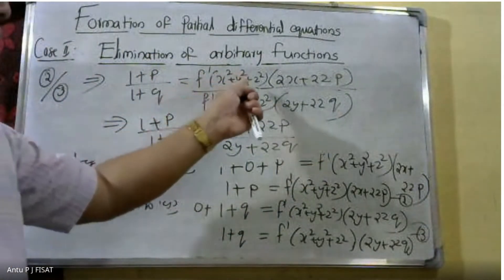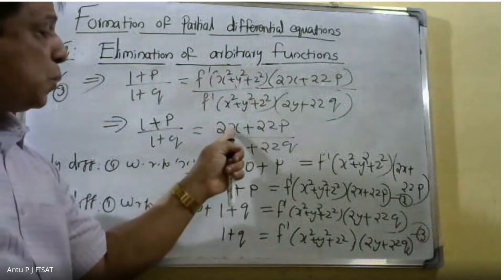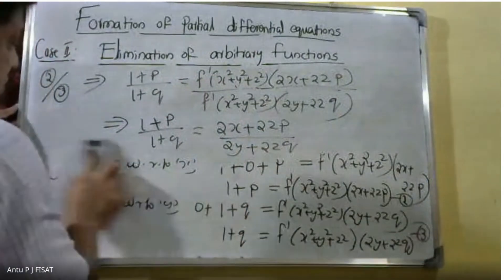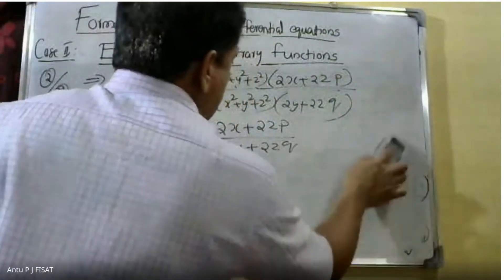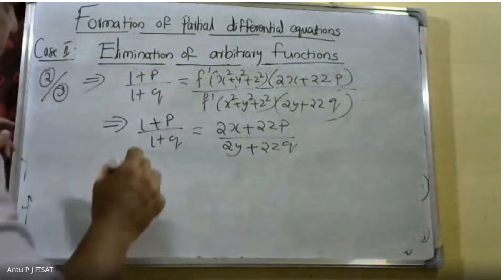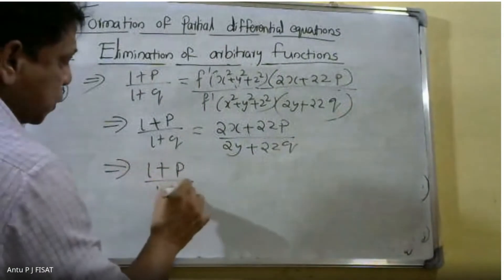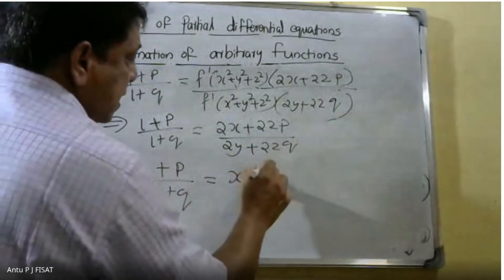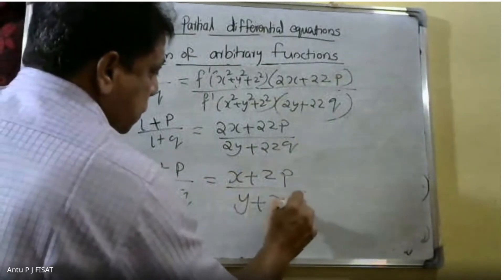F dash of X square plus Y square plus Z square cancels on both sides. The right hand side simplifies to 2X plus 2Z into P divided by 2Y plus 2Z into Q, which further simplifies to X plus ZP divided by Y plus ZQ.